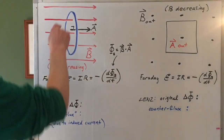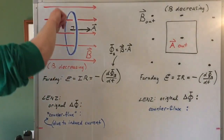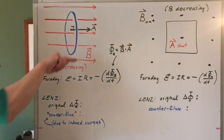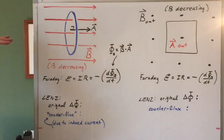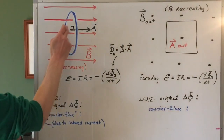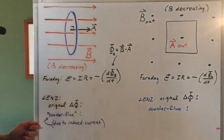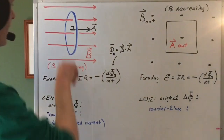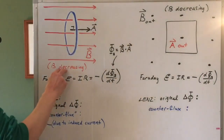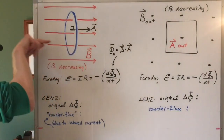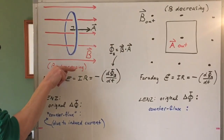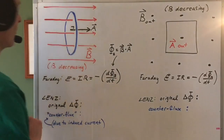Imagine I've got a loop of wire, a circular loop oriented this way, and I've got the magnetic field passing through it. There's the back of the loop, there's the front of the loop, and the magnetic field is going through that way. Let's imagine that this magnetic field, although it's to the right, is getting weaker and weaker.